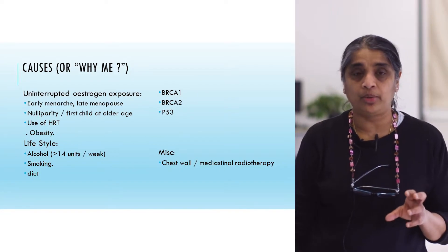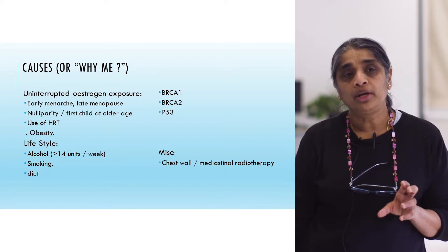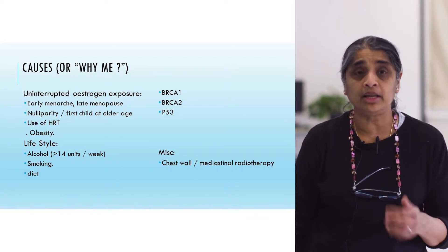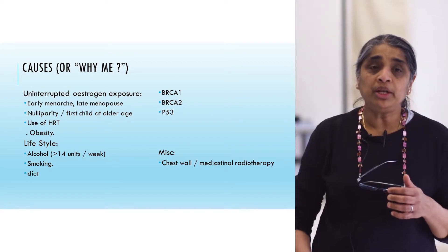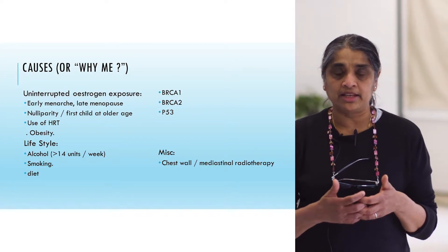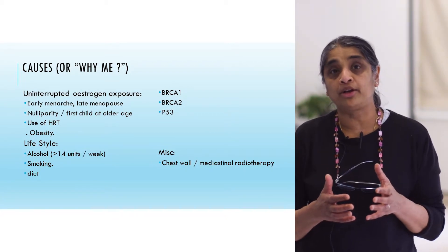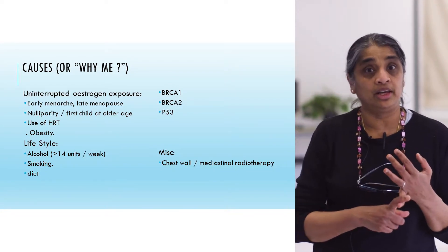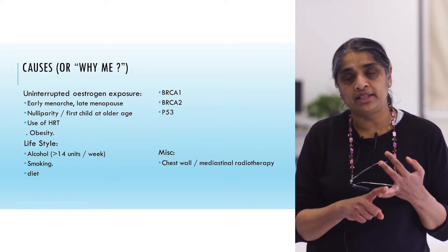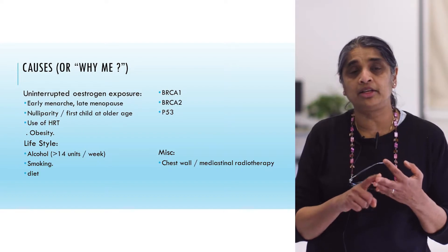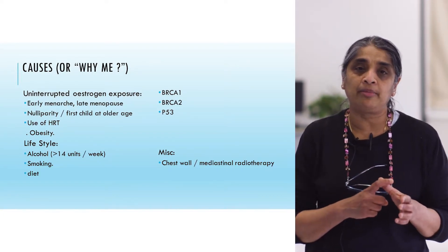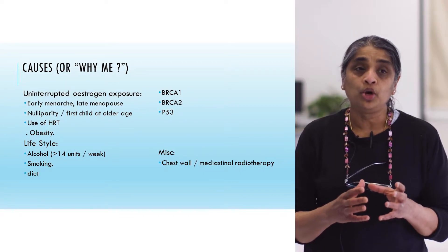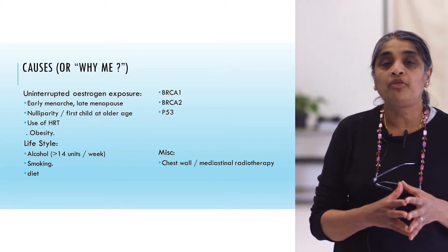Although the number of breast cancers that are hereditary is less than 5%, this is where doctors can make a difference by taking a good family history. Most hereditary breast cancers are related to BRCA1 or BRCA2 genes, and what you will find with these cancers is usually a cluster in the family, younger members with breast cancer, a history of ovarian cancer, a history of bilateral breast cancer, and men in the family with breast cancer. Taking a good family history is very important in identifying that group who could be referred to the genetics team.